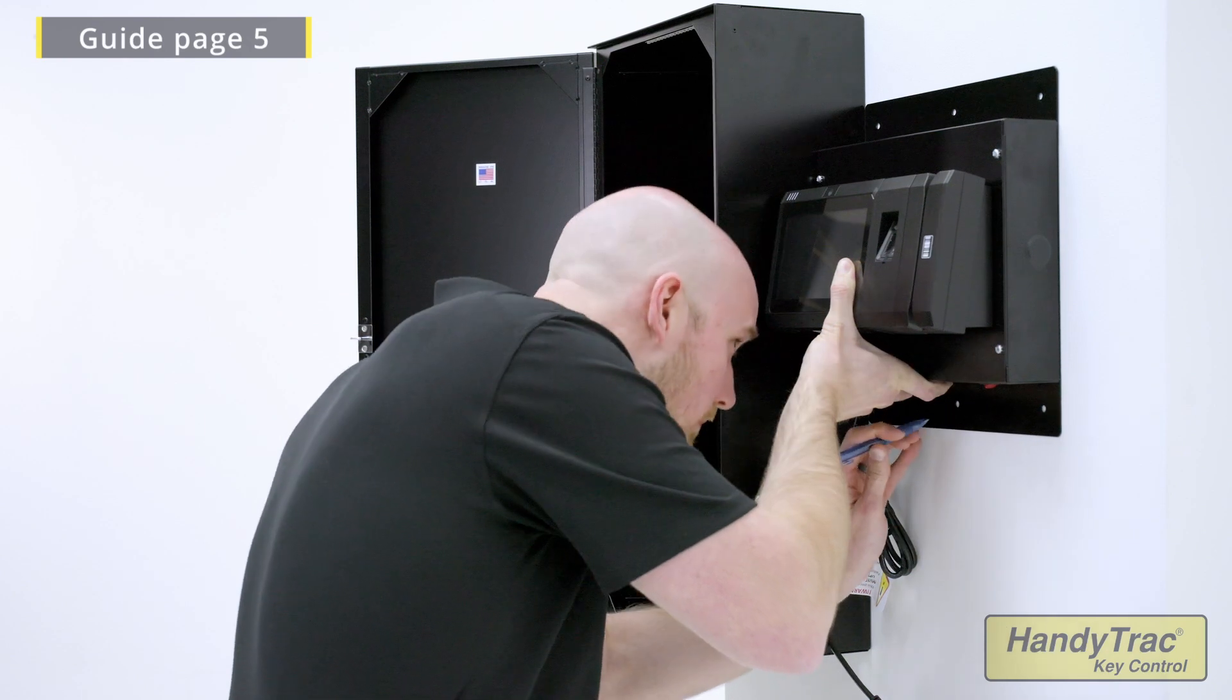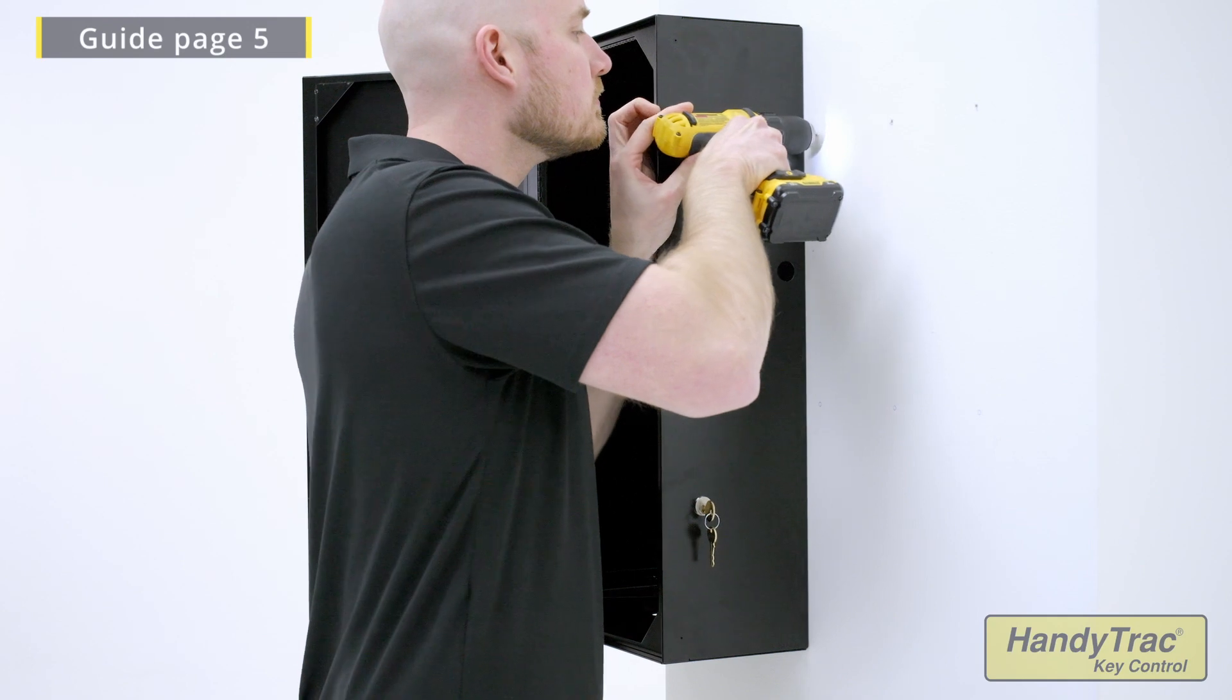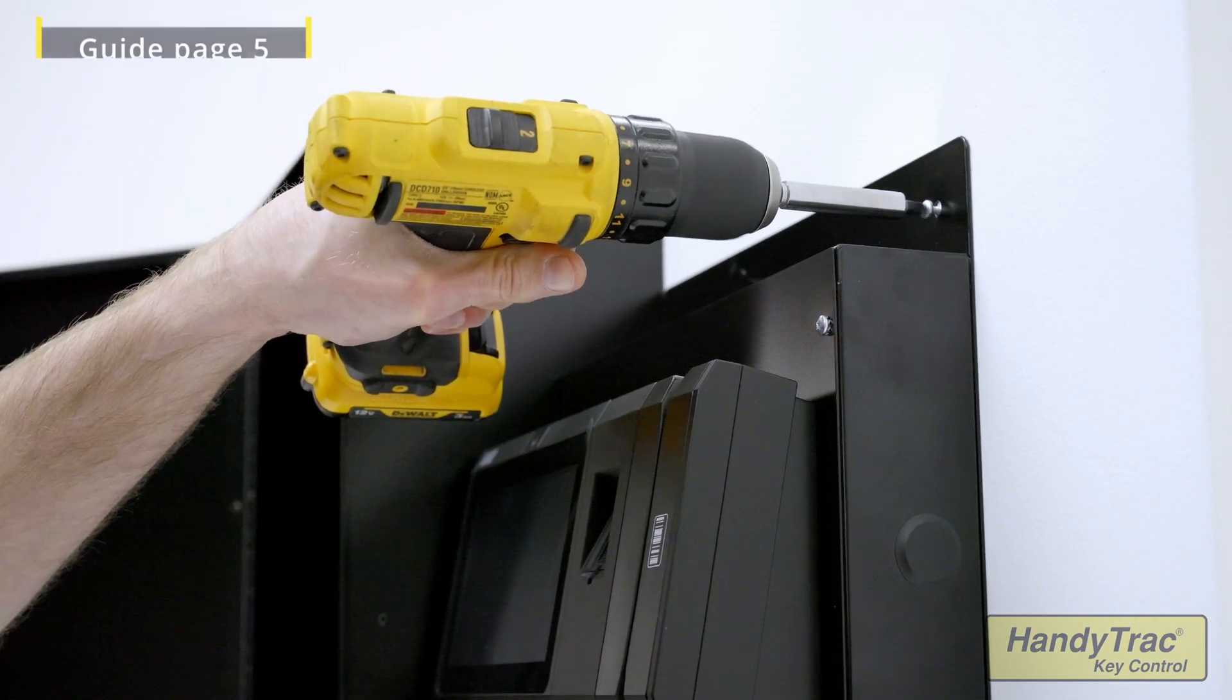Put the control box flush against the side of the cabinet, mark your holes, install anchors or drill pilot holes and mount your control box.